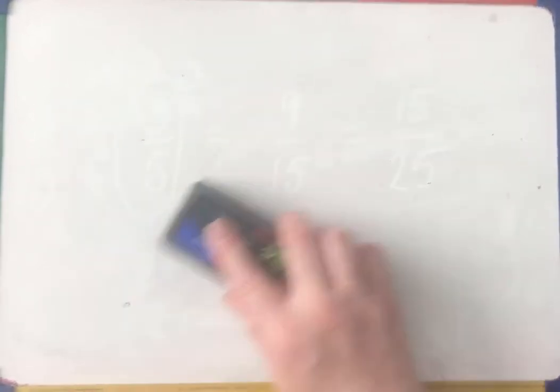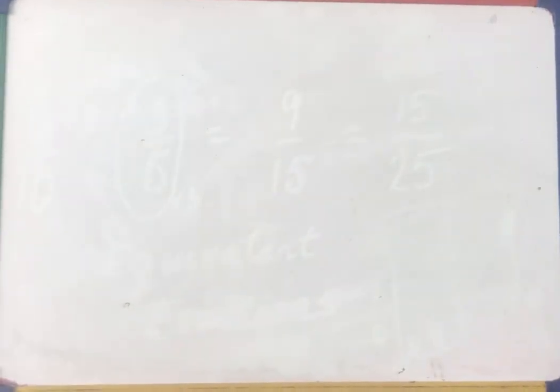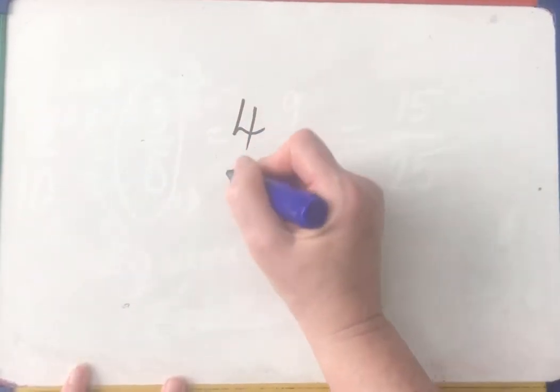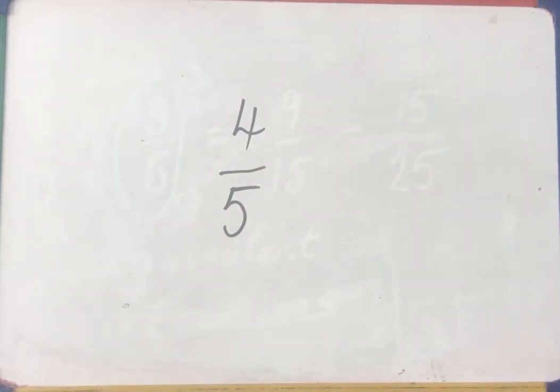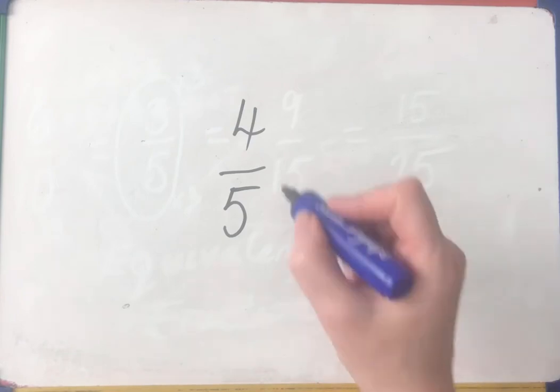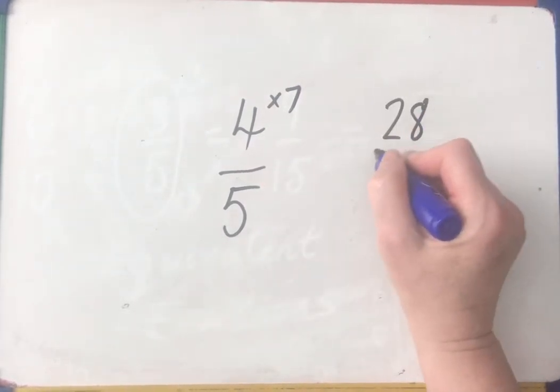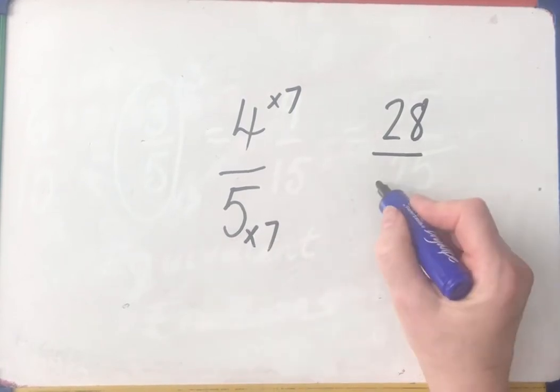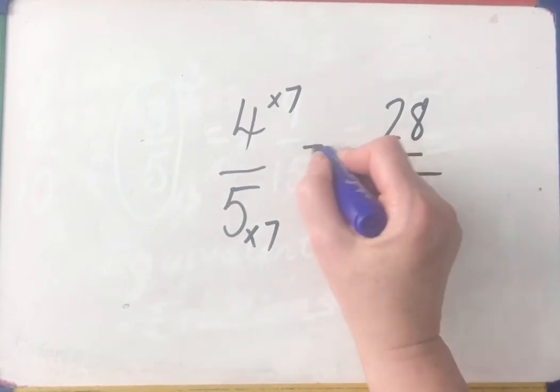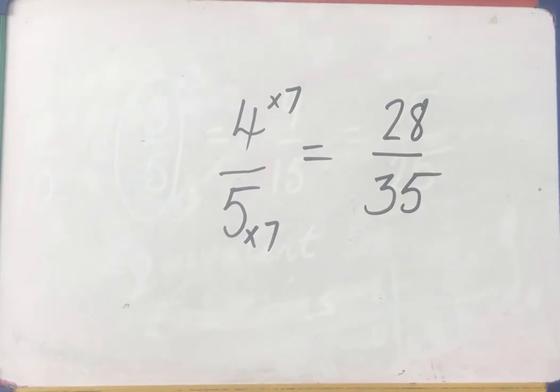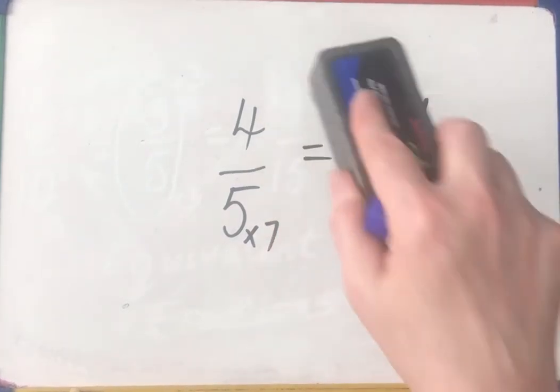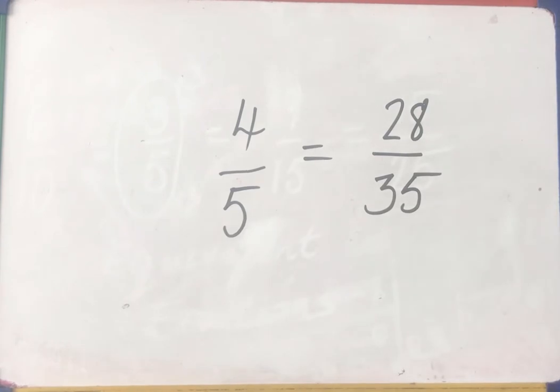Let's have a look at finding another one. If I have a fraction like 4/5 and I need to find an equivalent fraction to it, I have to choose something to multiply the top and the bottom by. So I'm going to choose 7. Well, if I multiply the numerator by 7, I have to multiply the denominator by 7. So 4/5 is equal to 28/35.